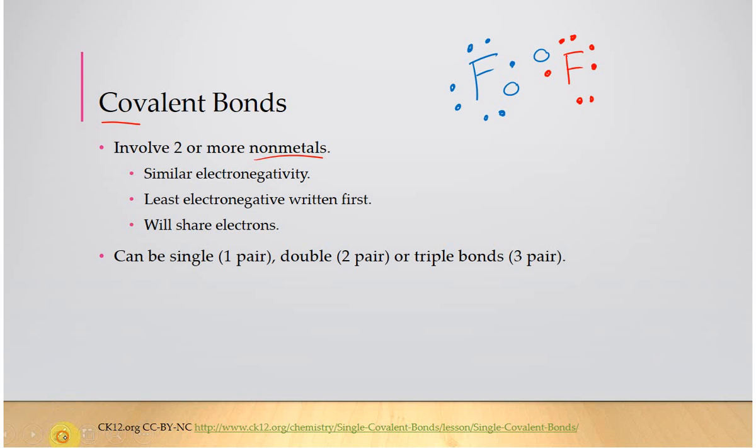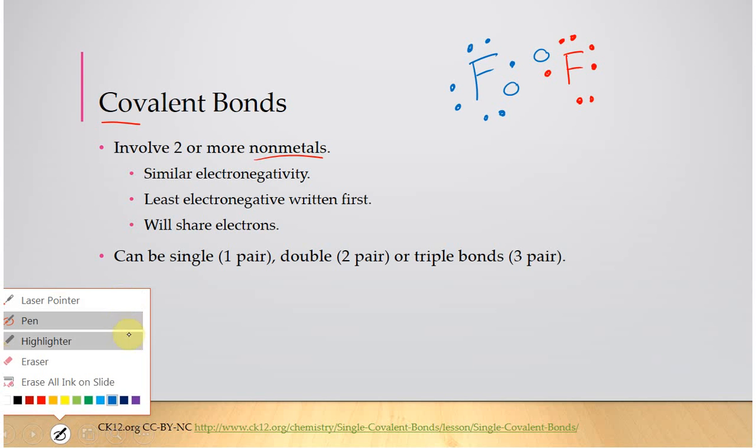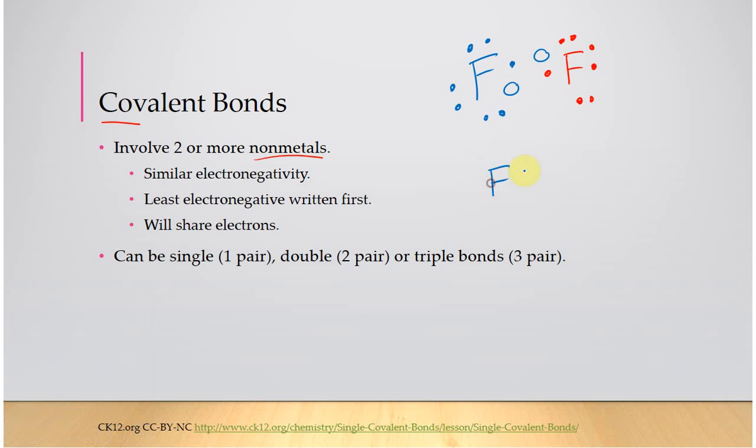So what happens is these guys are going to come together and make a bond where each fluorine now has eight electrons around it. This fluorine now has eight electrons around it.